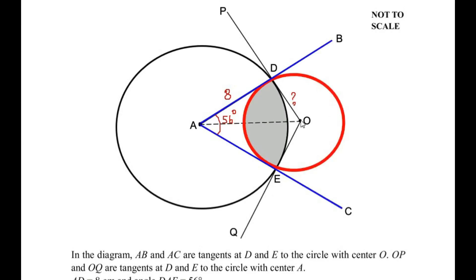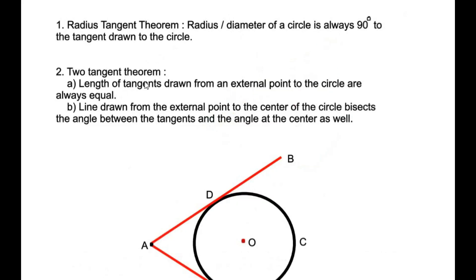To find the value of OD we are going to make use of two tangent theorems. The first one is the radius-tangent theorem, which states that the radius of a circle is always 90 degrees to the tangent drawn to the circle.